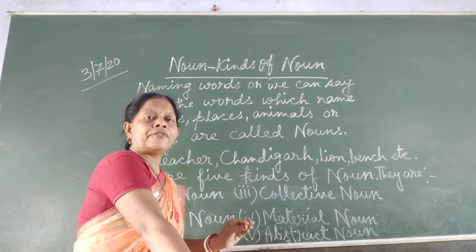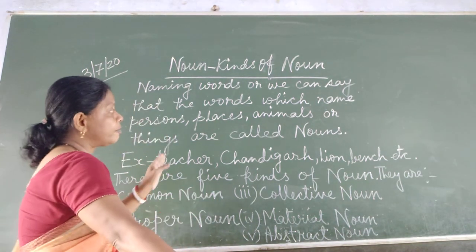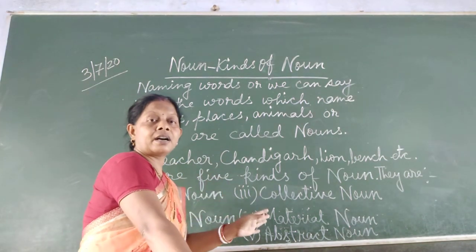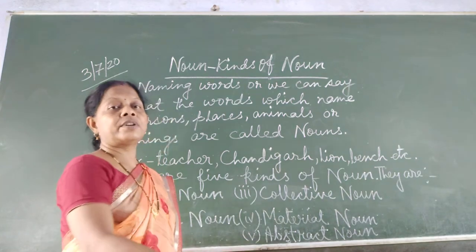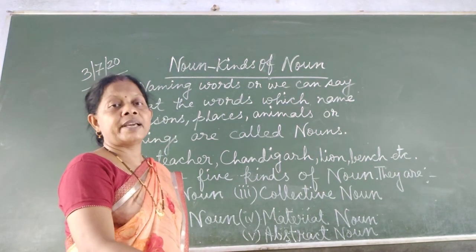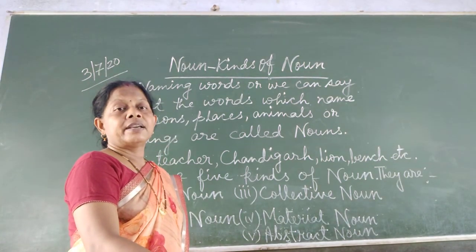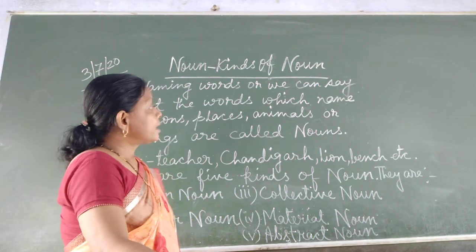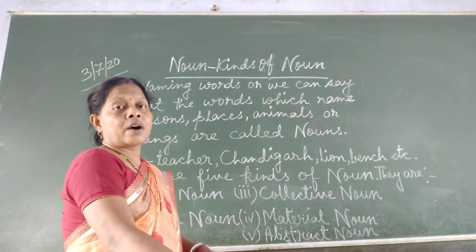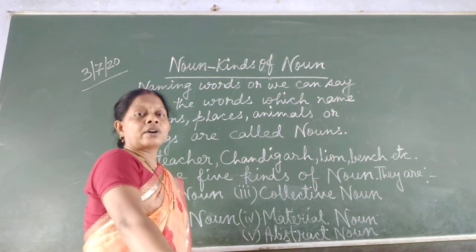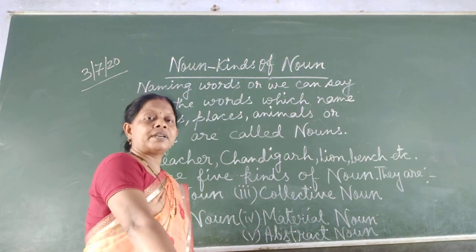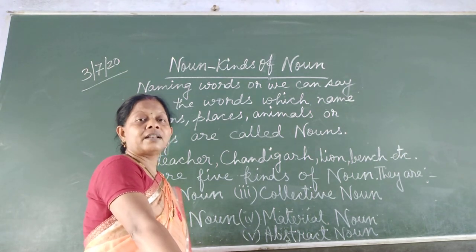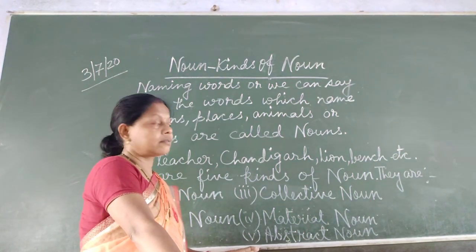If you have to say the names of places, you can say: Patna, Raipur, Assam, New Delhi, Mumbai, etc. Names of animals: cow, dog, cat, bear, lion, elephant, jackal, tiger, and so on.